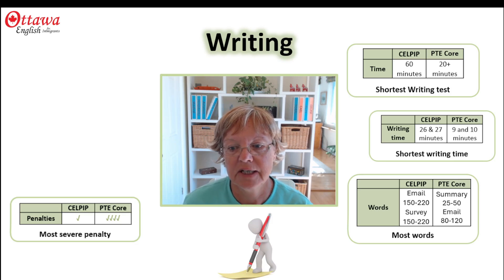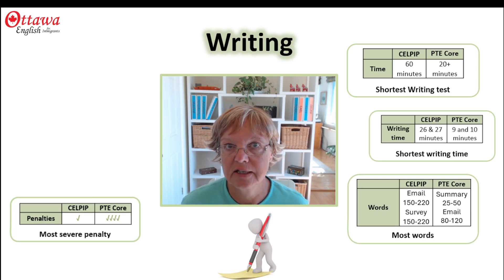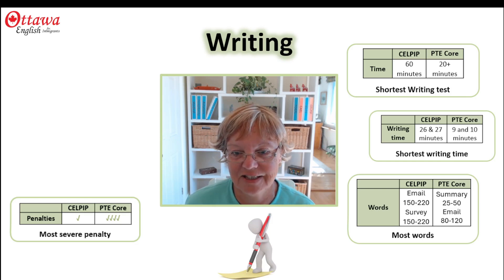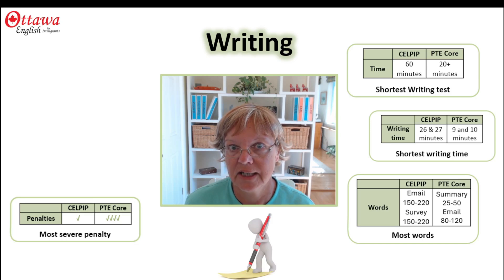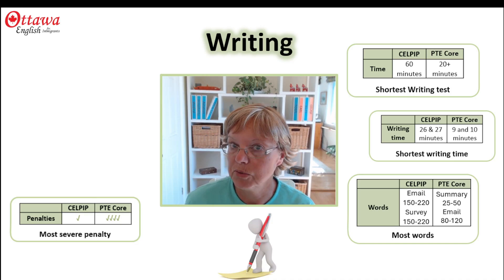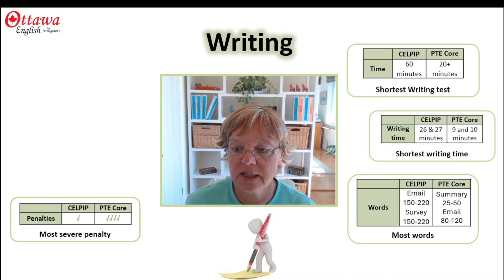The artificial intelligence checks the length of your writing before it starts to check anything else, and if you're over the word limit you just don't get a score. CELPIP on the other hand will deduct a couple of points for exceeding the word limit, but you will still get a score.